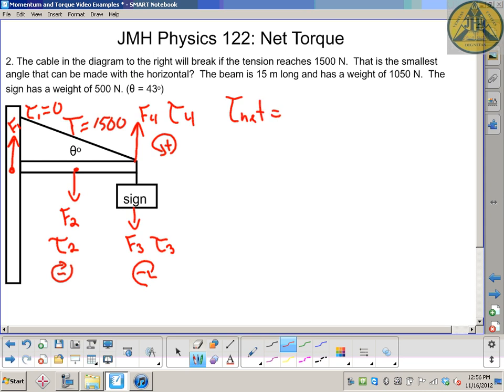So when I write it down in my equations, it would be a positive torque. So my net torque is going to be torque one, plus torque two, plus torque three, and plus torque four.